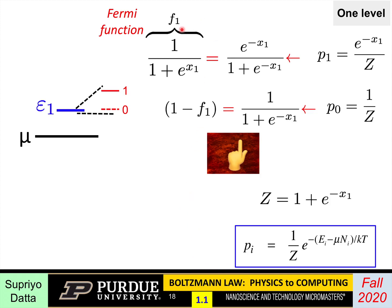We can also evaluate the probability that the system will be in state zero, which is one minus f_1, because f_1 is the probability of finding an electron in that level, and one minus f_1 is the probability of not finding one — i.e., the probability the system is in the zero state. All of this follows straight from Boltzmann's law. Now let's go through a more complicated example involving two energy levels.